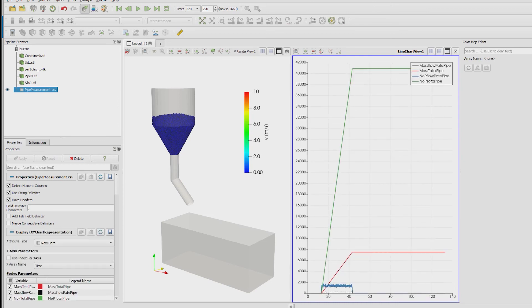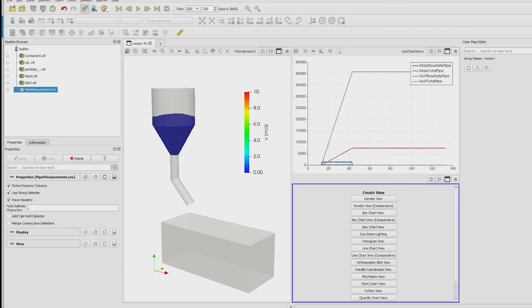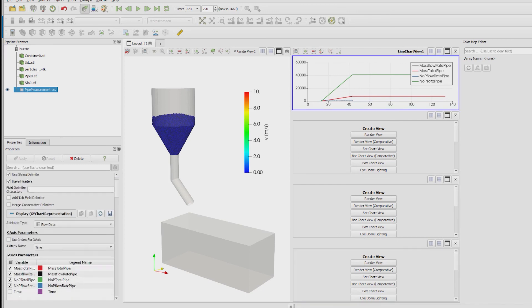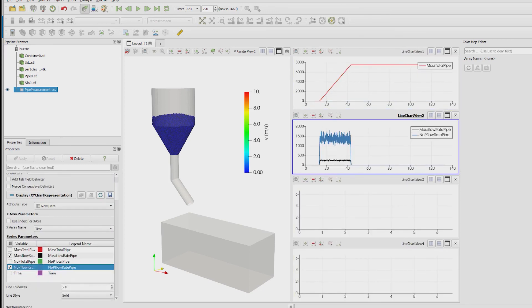mass flow rate and particle flow rate. Because the values are in different ranges we split the line view three times more and activate each graph separately to one diagram.